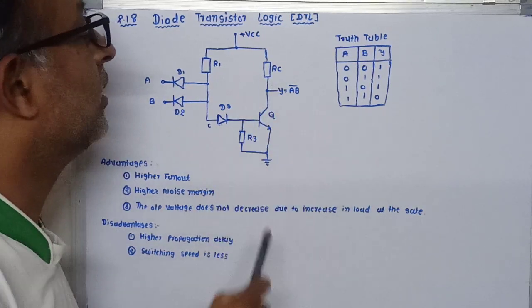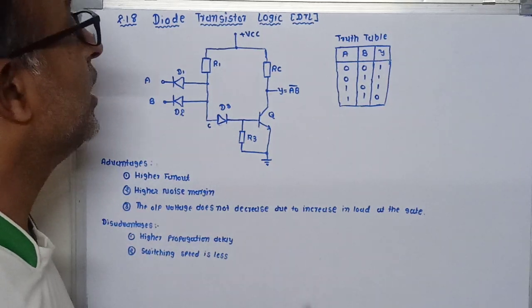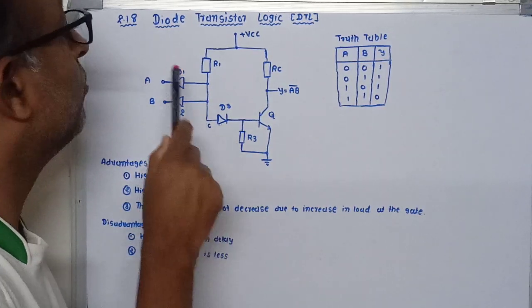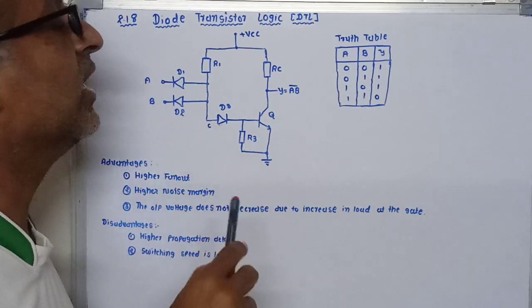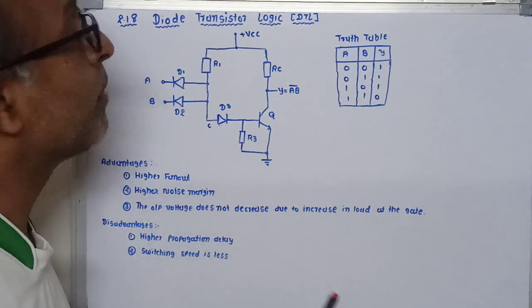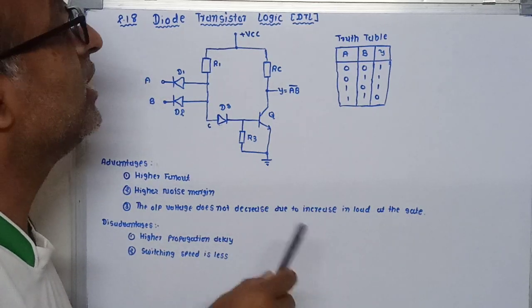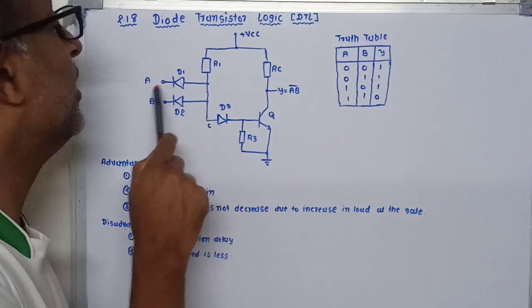Here, when we apply or give zero input to both A and B, we will get higher level or you can say logic 1. So you understand when we apply zero input to the circuit, as a result, the output of this transistor will become 1.